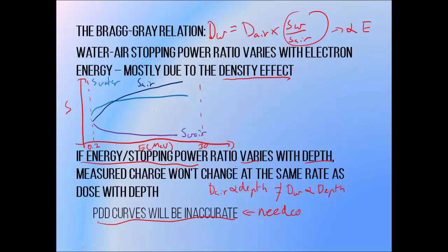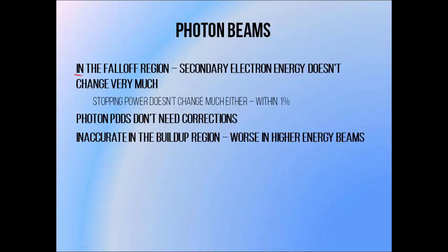We need to apply corrections in order to account for this, which come in the form of depth-dependent stopping powers. In the fall-off region of photon beams, secondary electron energy doesn't change very much. This is because photon beams tend to experience a reduction in the number of photons in the beam with depth, rather than energy.